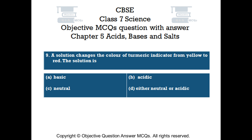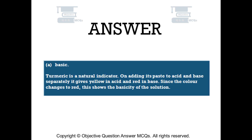The right answer is Option A: basic. Turmeric is a natural indicator. On adding its paste to acid and base separately, it gives yellow in acid and red in base. Since the color changes to red, this shows the basicity of the solution.